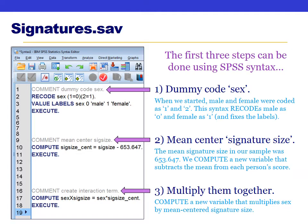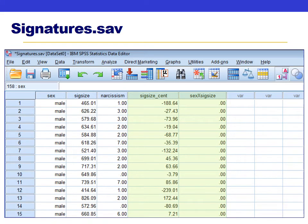Step three is to create the interaction term by literally multiplying the two predictors together. We compute a new variable called sex_by_sig_size, equal to the dummy-coded sex variable multiplied (that's what the asterisk does) by the mean-centered signature size for each person. Running all the syntax gives us two new variables in the data file. Note that all the men will have an interaction term equal to zero — that's not a mistake, that's exactly how it should look.